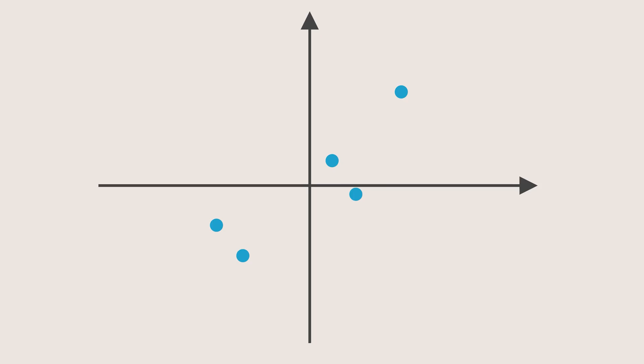Now for our five-sample dataset, this process gives us two principal components, represented by red and blue vectors. To reduce the dataset from 2D to 1D, we can drop the blue component, since it has lower variance. And keep only the red component, which captures the most important information.